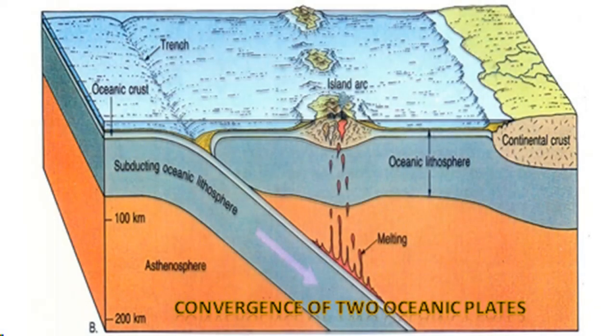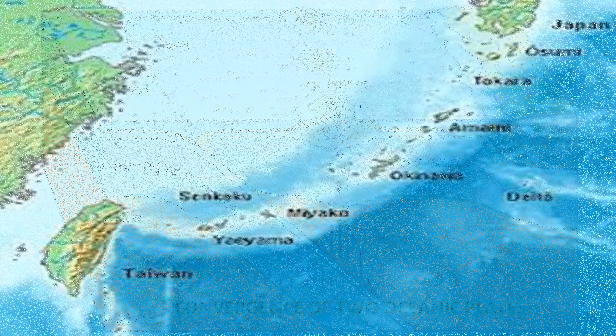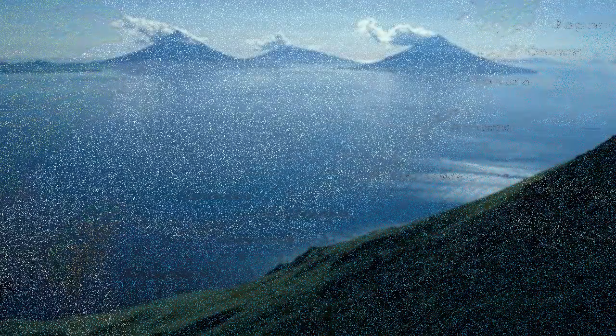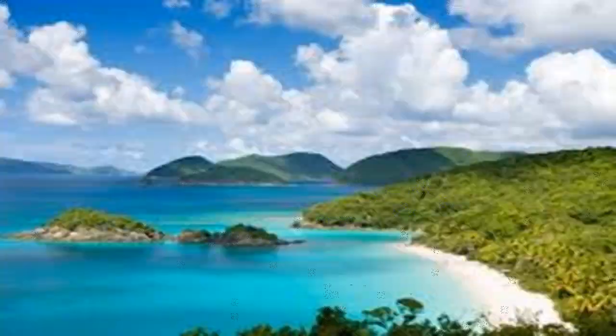The leading edge of the subducted plate will eventually reach the mantle, causing it to melt and turn into magma. The molten material rises to the surface, creating a volcanic arc parallel to the trench. A volcanic island arc is a chain of volcanoes positioned in an arc shape, such as the Japanese Islands, the Aleutian Islands, the Caribbean Islands, and the Philippine Islands.